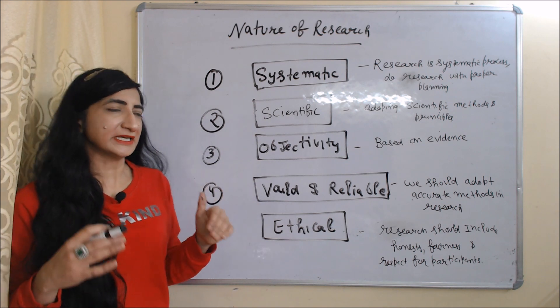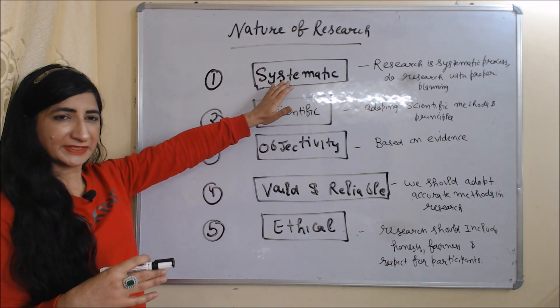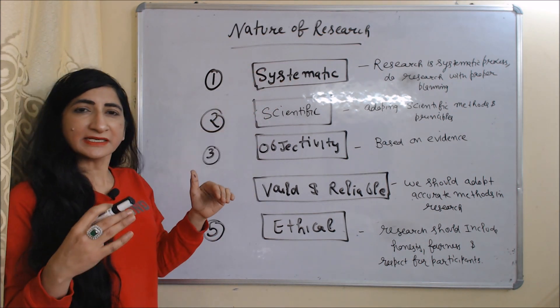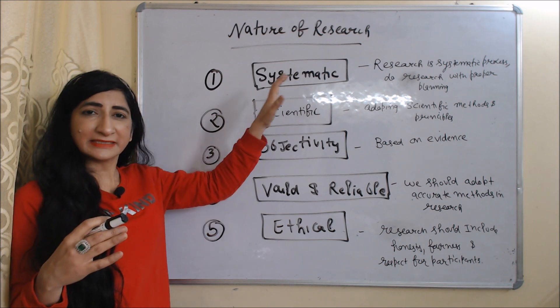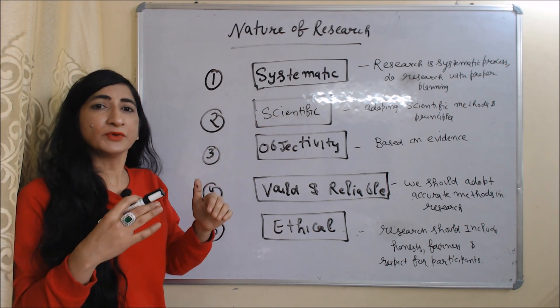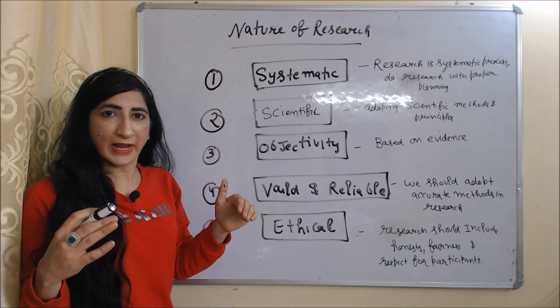Now we are going to talk about the nature of research. First is systematic. Research is a systematic process, which means we do research by proper planning.